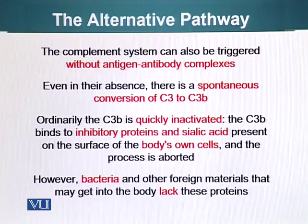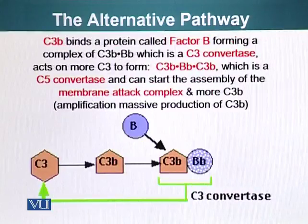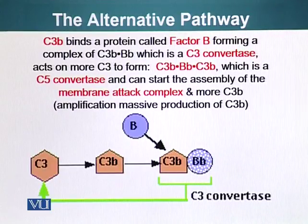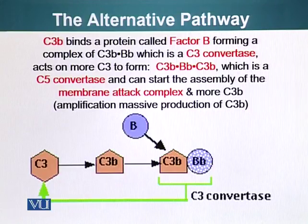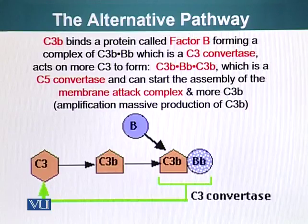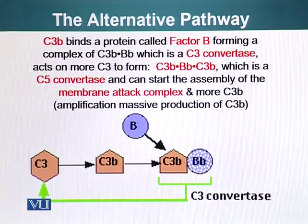However, bacteria and other foreign materials that may get into the body lack these proteins — they are specific to our cells. C3 binds a protein called Factor B, forming a C3B-B complex, which is also a C3 convertase. This acts on other C3 to form C3B-B and C3B complex, which can also cleave C5 and is therefore called C5 convertase. This can start assembly of the membrane attack complex and more C3B, amplifying massive production of C3B.